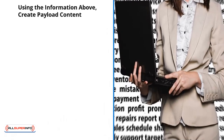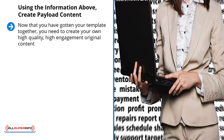Using the information above, create payload content. Now that you have gotten your template together, you need to create your own high-quality, high-engagement original content. This content is going to be used to sell people on your mailing list. When they read this content, they're supposed to get excited about joining your mailing list. This is content that is most likely to be credible and most likely to be shared.